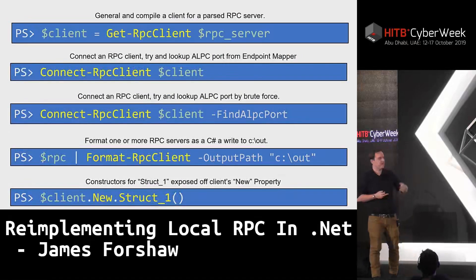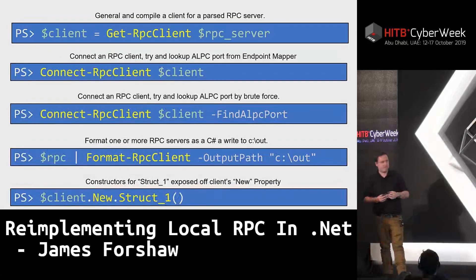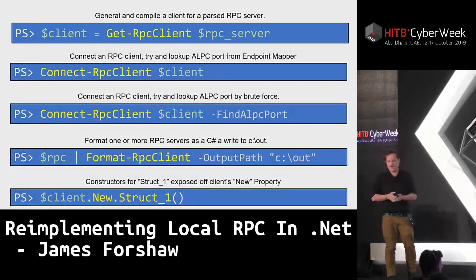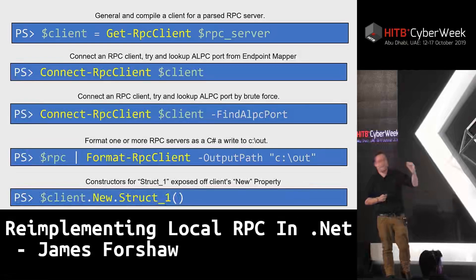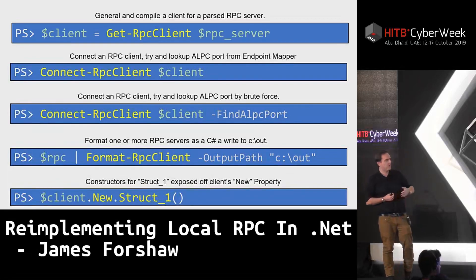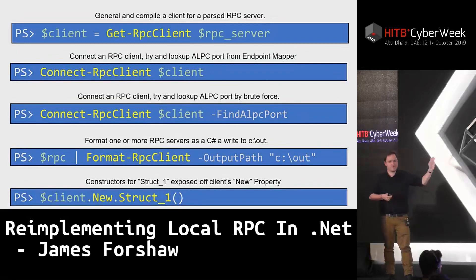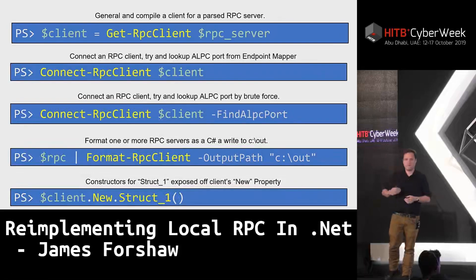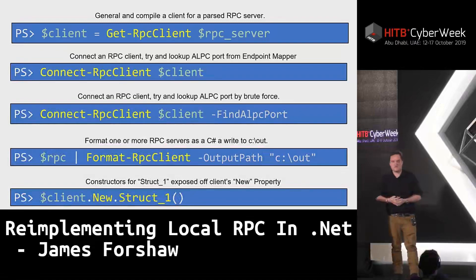In PowerShell, Get-RpcClient takes one of the parsed RPC servers, generates a C# file, compiles it, emits a type, instantiates a copy, and returns your client. That client isn't yet connected. To make the connection, call Connect-RpcClient — without parameters it uses the endpoint mapper to look up the ALPC server, or you can pass an explicit name. If neither works, try Find-AlpcPort for brute-forcing. If you want the C# files themselves, Format-RpcClient accepts a large list of RPC servers and an output directory, outputting each server as a separate C# file you can compile directly into your application.